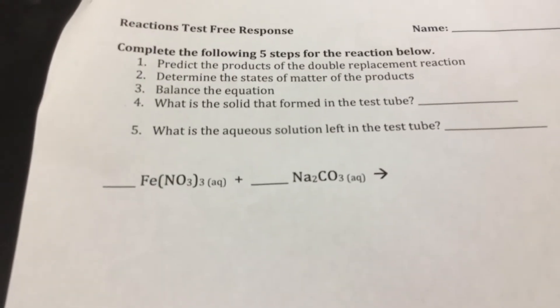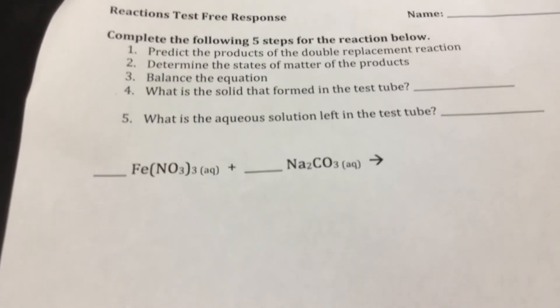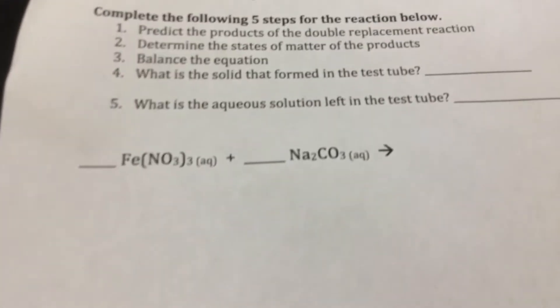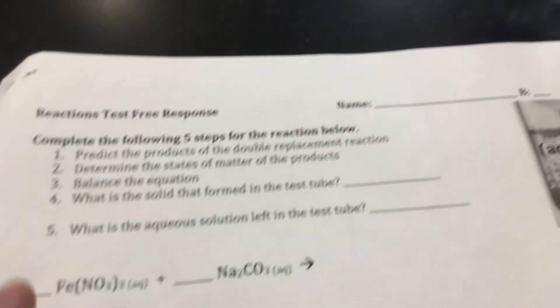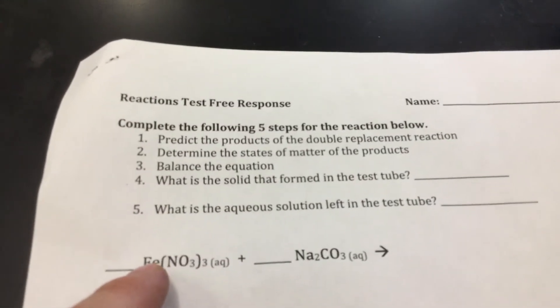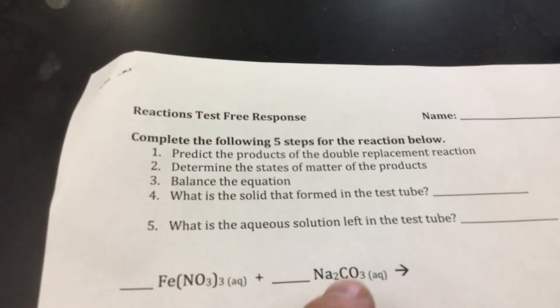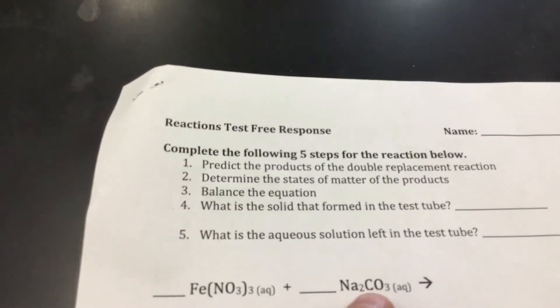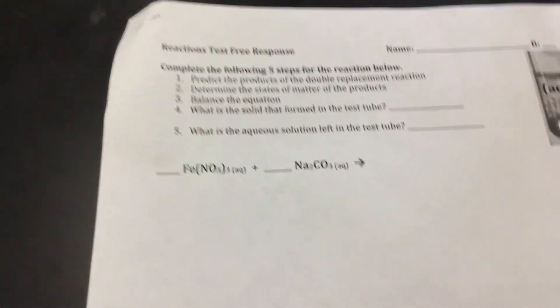So your job now as a chemist here is to now use your ion sheet to determine the products of the double replacement reaction. So just like we practiced, this is going to be your A, this is going to be your B, and then you've got C and D there. That's as much help as I can give you.